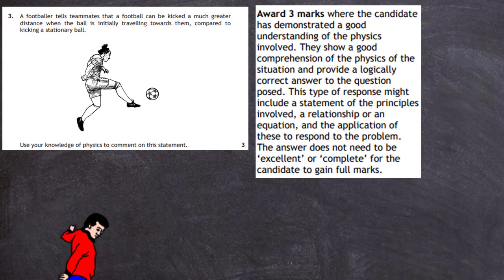Here's what the examination board says: if you want to have the top marks in this question — three out of three — then you have to have a good understanding of the physics involved. You've always got to show a good comprehension of the physics of the situation and provide a logically correct answer to the question posed.